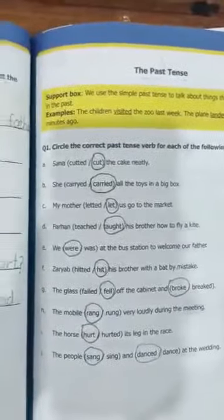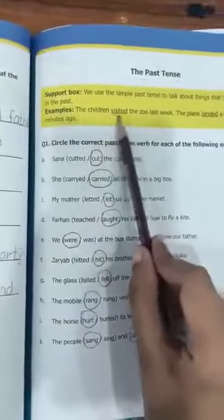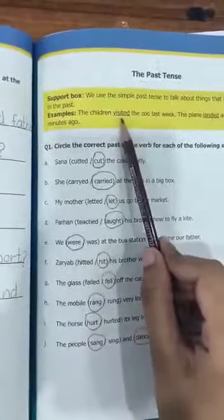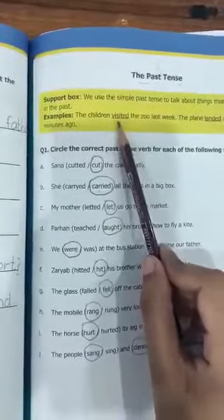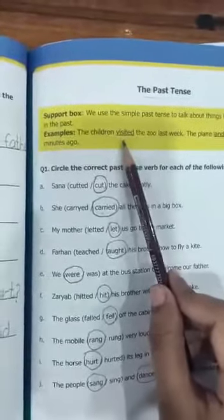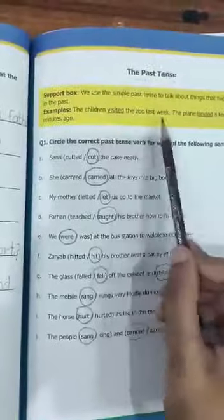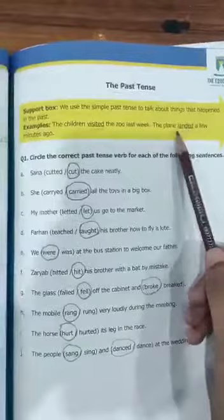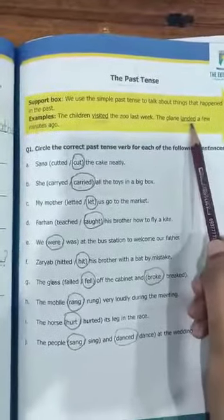For example, 'the children visited the zoo last week.' We use the second form of verb, which is 'visited.' First form is 'visit' and the second form is 'visited.' Another example: 'the plane landed a few minutes ago.' 'Land' is the first form and second form is 'landed.' We know from this second form that this is past tense.